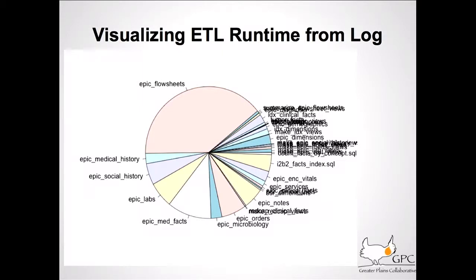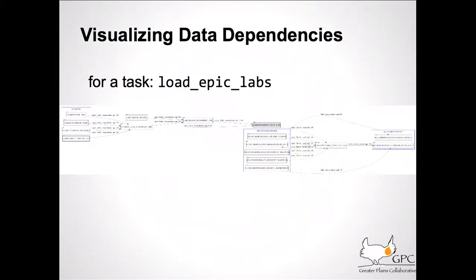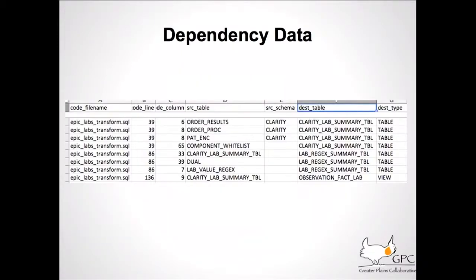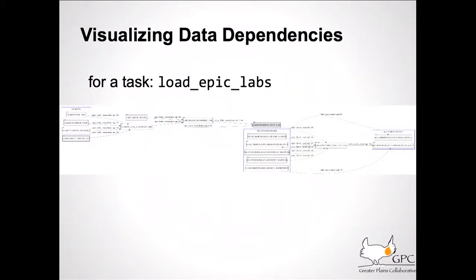Earlier we visualized the task dependencies, but that doesn't show data dependencies completely. To get the data dependencies, it turned out there's a SQL parser in the PyParsing package by Paul McGuire that's one of the examples — it only did SELECT and only for SQLite. So I extended it with INSERT, UPDATE, and the rest, plus crazy Oracle things like CONNECT BY. Out comes the CSV version of the data dependencies — where the dependency is, what is the source and the destination. Then we run it through GraphViz and out comes these diagrams, which is pretty cool.